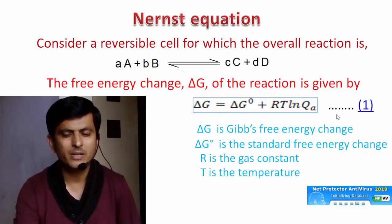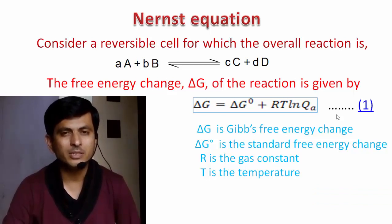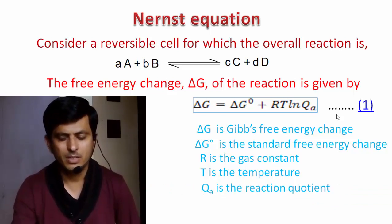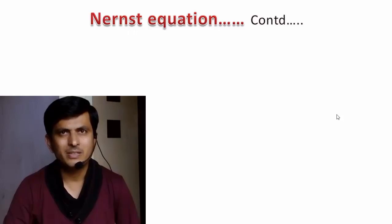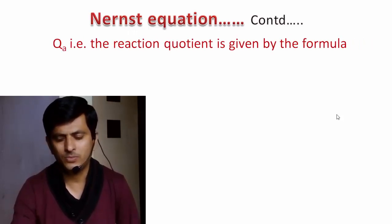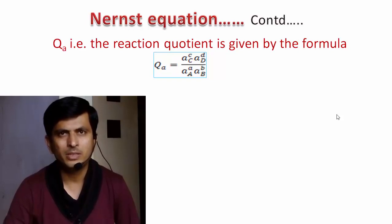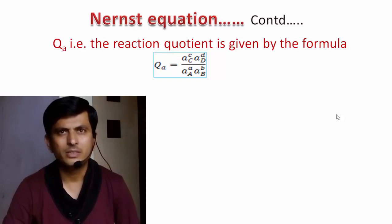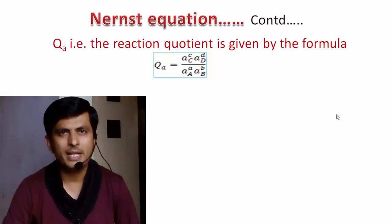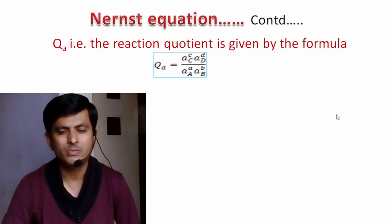The last but important term is the reaction quotient QA. QA is given by the formula: QA = (AC^c · AD^d) / (AA^a · AB^b), that is, the activity of products divided by the activity of reactants, each raised to their respective stoichiometric coefficients.